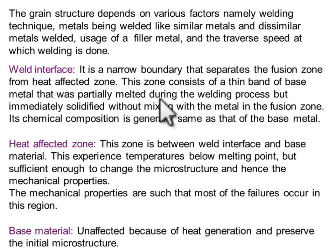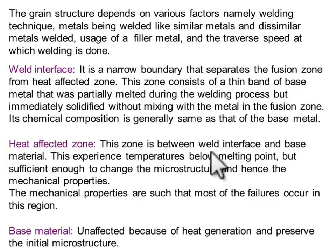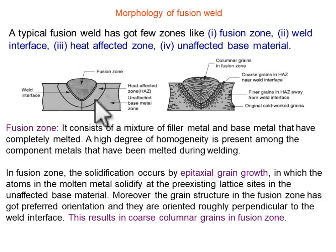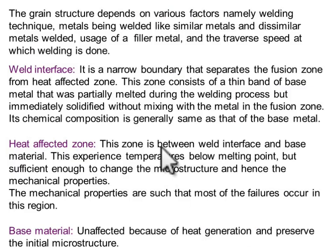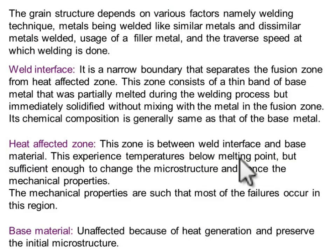The weld interface is a narrow region that differentiates the fusion zone from the heat affected zone. This zone consists of a thin band of base metal that is partially melted due to heat interaction from the fusion zone. The heat affected zone lies between the weld interface and the base material. The temperature in this zone is below the melting point, so melting is not happening in the heat affected zone.